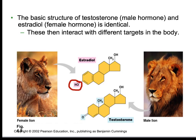In testosterone, we've got the double-bonded oxygen sitting in that place, and then we add an extra CH3. So the general structure of these compounds is exactly the same, and all we've added is some different bells and whistles, some different ornaments. That gives them different properties, and their different properties determine whether you're going to be female or male, just by the presence or absence of those different functional groups.